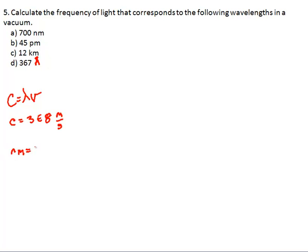Nanometers is times 10 to the negative 9th. Picometers is equal to 10 to the negative 12th. Kilometers is 10 to the 3rd. And angstroms is equal to 10 to the negative 10th.